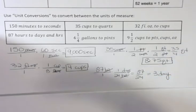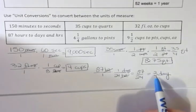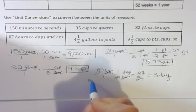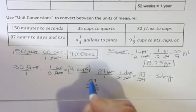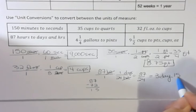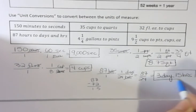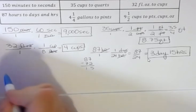To find the remaining hours, three days is 24 times 3, which is 72 hours. I have 87 hours total, and I've accounted for 72, so I have 15 hours left over. That gives me three days and 15 hours in 87 hours.